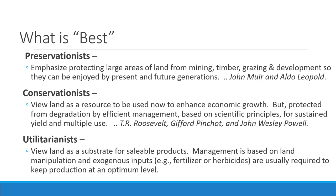Conservationists view land as a resource that can be used now for economic growth, and it can also be protected from degradation with science-based effective management so that it could be sustained for future generations. The idea is that we could use land if we did it carefully, and it could be used sustainably — sustained yield and multiple use. People like Theodore Roosevelt, Gifford Pinchot, the first chief of the Forest Service, and John Wesley Powell all thought that land could be used and preserved at the same time.